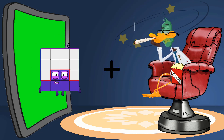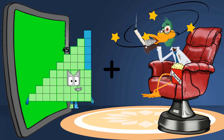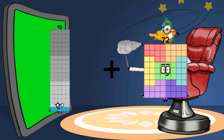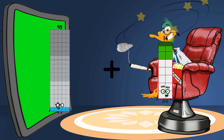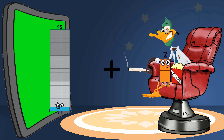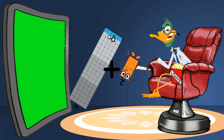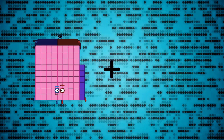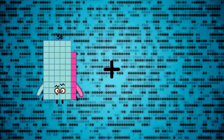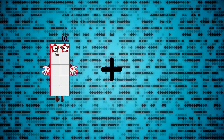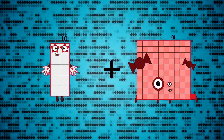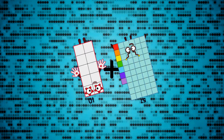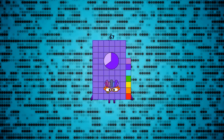95 plus 2 equals 97. 10 plus 57 equals 67.